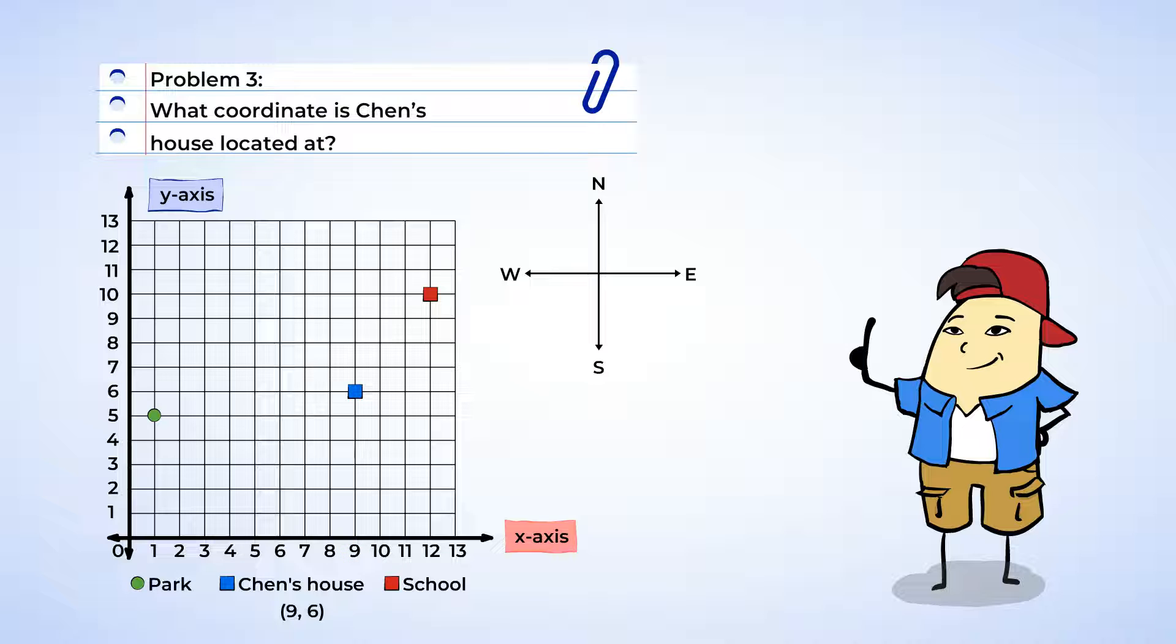But how do you remember which number comes first? Well, think about it in alphabetical order. Since x comes before y in the alphabet, we always list our coordinates as x, y.